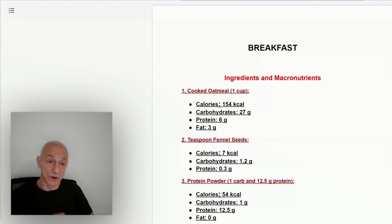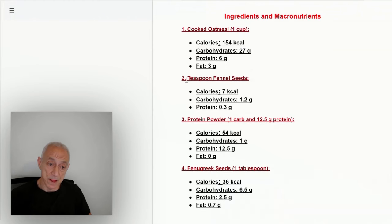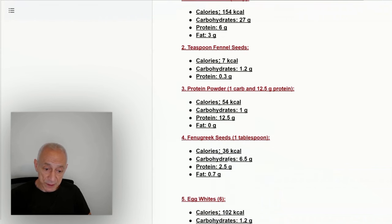By the way, today is June 24th, 2024, and as you can see, we'll start with my breakfast. The ingredients and macronutrients of my breakfast are as follows: one cup of cooked oatmeal, which is 154 calories, 27 grams of carbohydrates, 6 grams of protein, 3 grams of fat. Inside the oatmeal I put a teaspoon of fennel seeds, 7 calories.